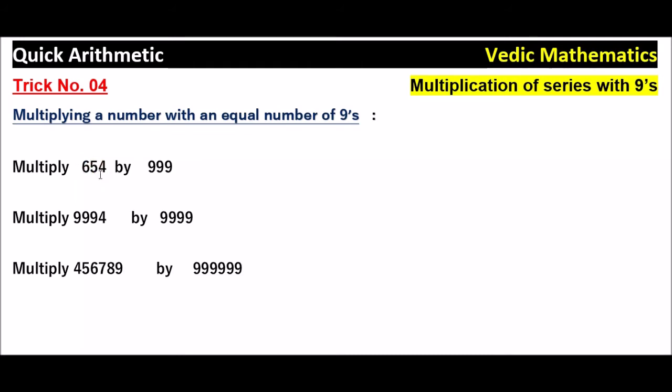So the first step is to subtract 1 from the given number. 654 minus 1 is 653.